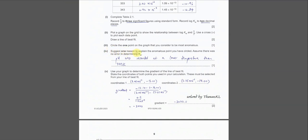Part 4: Suggest one reason to explain the abnormal point you have circled, assuming there was no error in determining Kw. The reason is that the pH was recorded at a lower temperature than 343 K. Because pH is used to calculate the concentration of H⁺, and from that we get Kw, an incorrect temperature during pH recording leads to an anomalous Kw value.